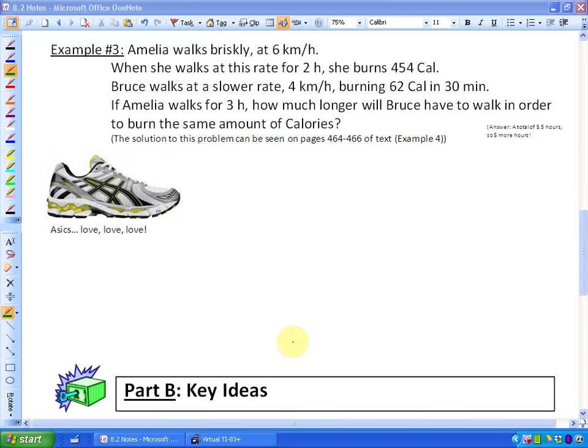So it says Amelia walks briskly at six kilometers per hour. When she walks at this rate for two hours she burns 454 calories. Bruce walks at a slower rate, four kilometers per hour, burning 62 calories in 30 minutes. If Amelia walks for three hours, how much longer will Bruce have to walk in order to burn the same amount of calories?